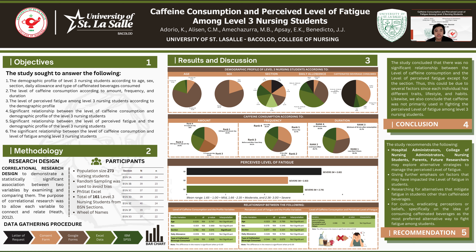For the research design, the study uses a correlational research design to demonstrate a statistically significant association between two variables by examining and comparing them. The purpose of correlational research design was to allow each variable to connect and relate. The population size was 273. The sampling method used was random sampling to avoid biases. The sample size of the study was 161, selected using a wheel of names, gathering 22 to 24 nursing students from each section.